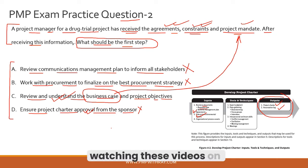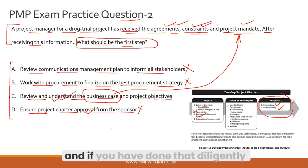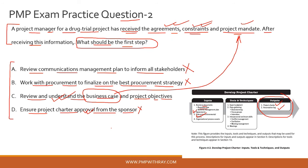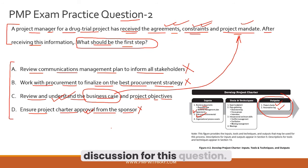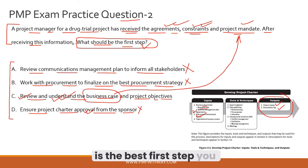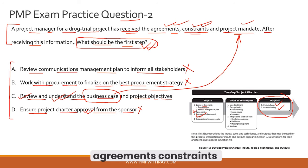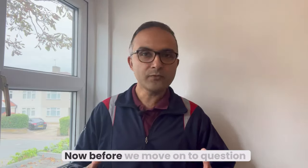Option D is basically jumping one step ahead. Be aware of situations where the PMP exam tries to trick you this way. The correct answer to this question is option C: review and understand the business case and project objectives. That is the best first step after receiving the agreements, constraints, and project mandate for your drug trial project.